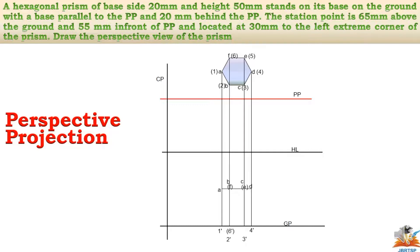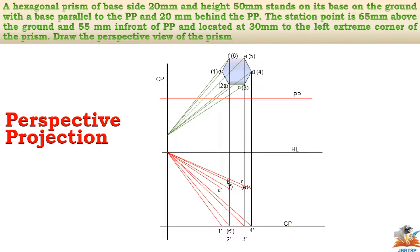Now we have to locate the station point. From our given data, the station point is 65mm above the ground and 55mm in front of the picture plane. We locate a point 55mm from the picture plane and join all the points to the station point. Similarly, from the front view, we join all the points to the station point.